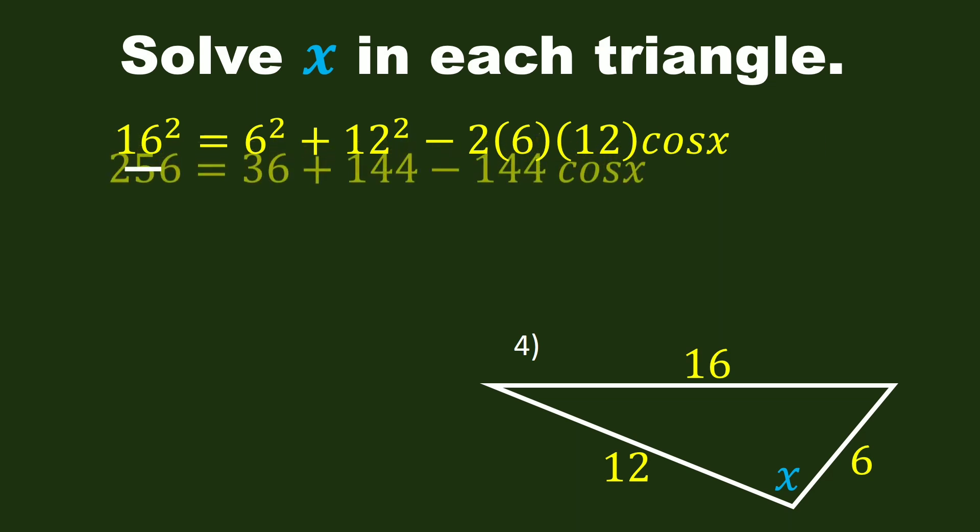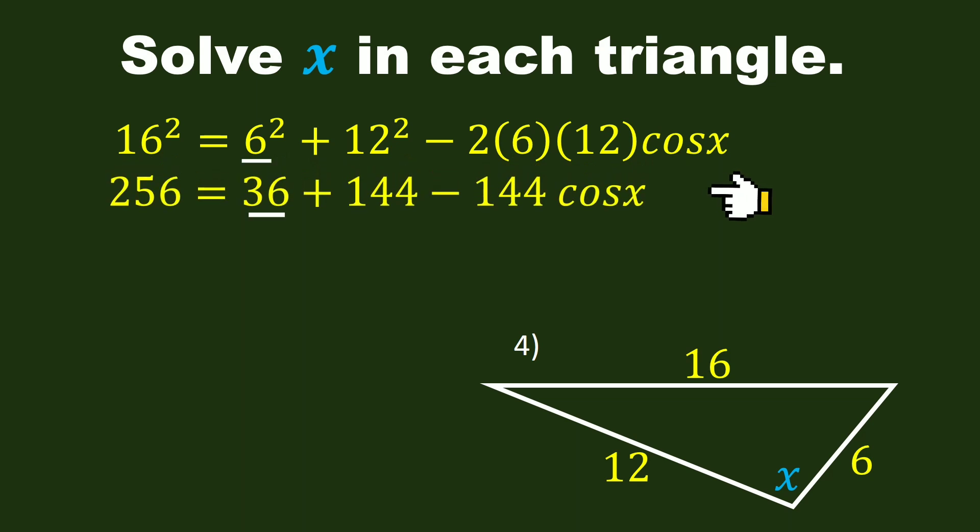16 squared is 256. 6 squared is 36. 12 squared is 144. 2 times 6 times 12 is 144. Bring down cosine X. Bring down 256. 36 plus 144 is 180. Bring down negative 144 and cosine X.